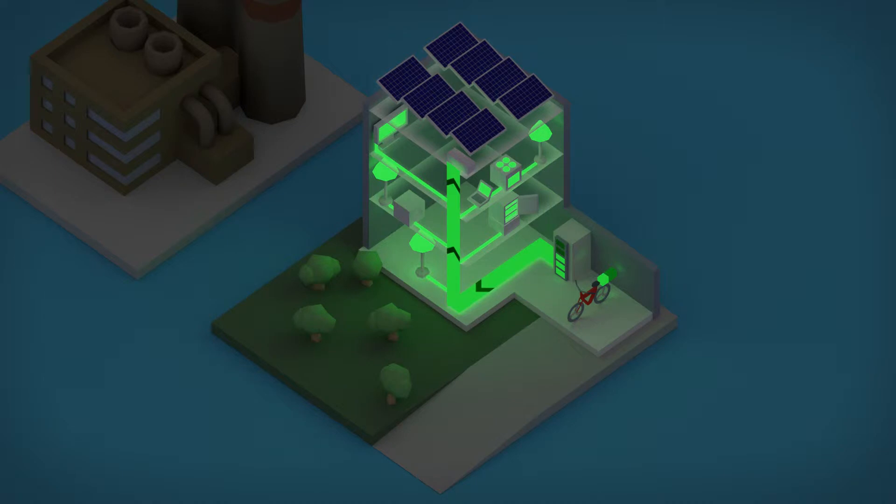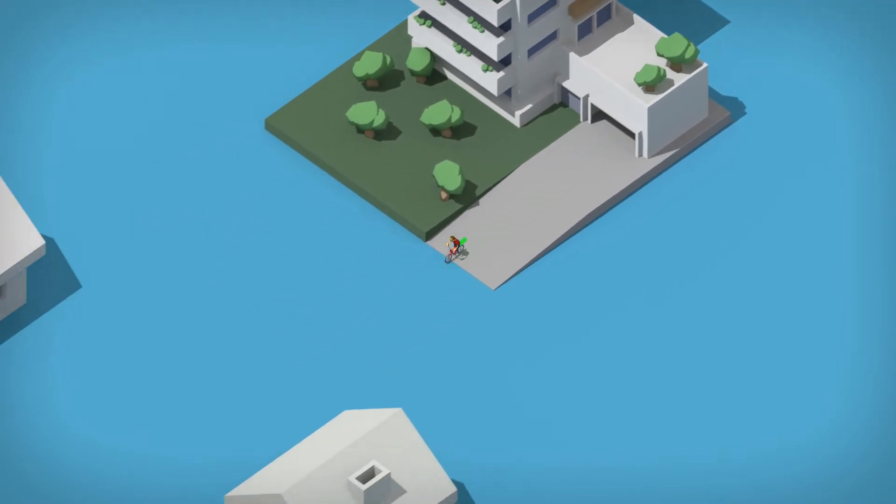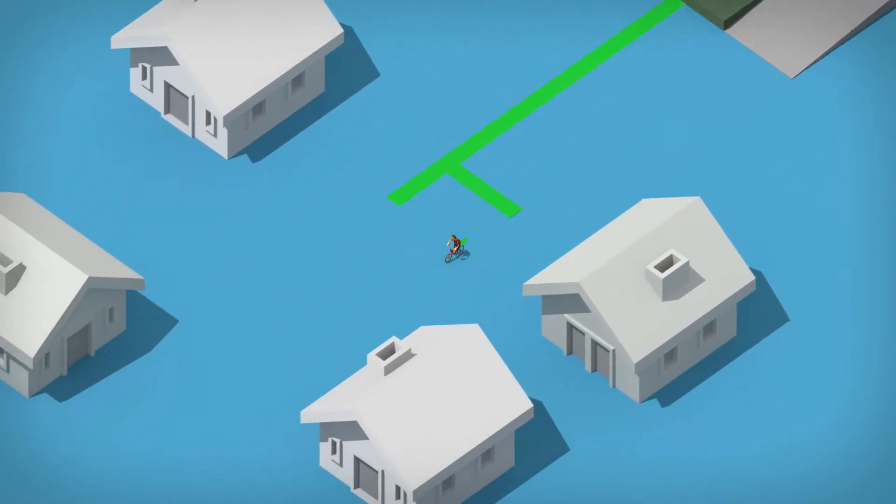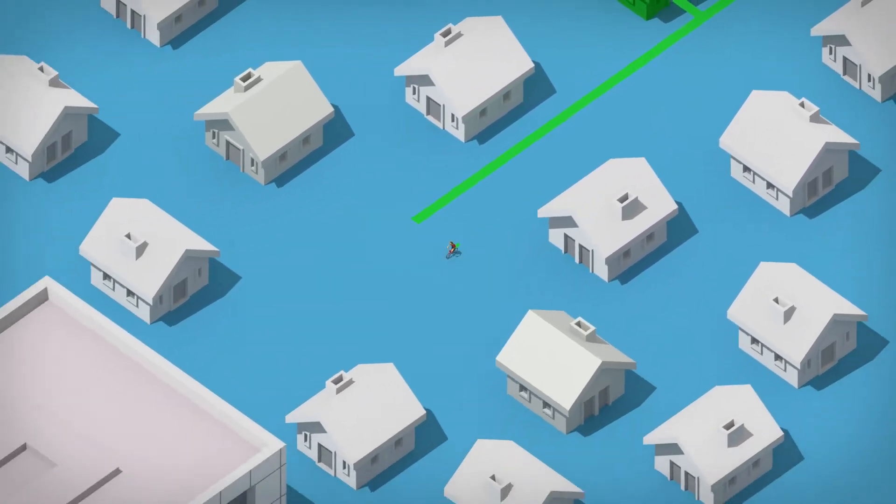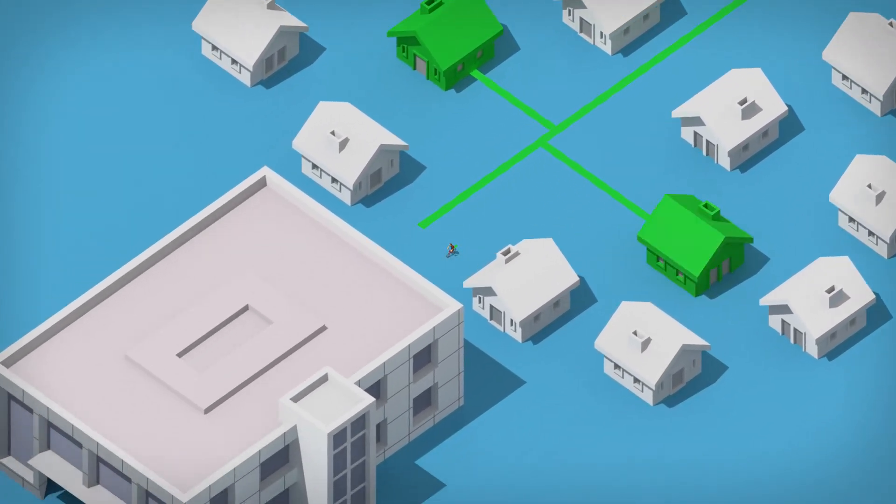Tom can also take his solar power with him or supply the neighborhood. Thanks to his photovoltaic system, Tom is a solar power prosumer, a producer and consumer in one.